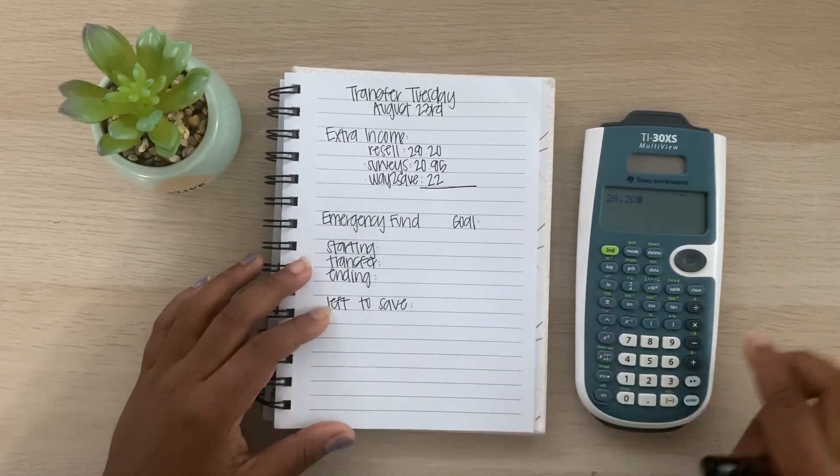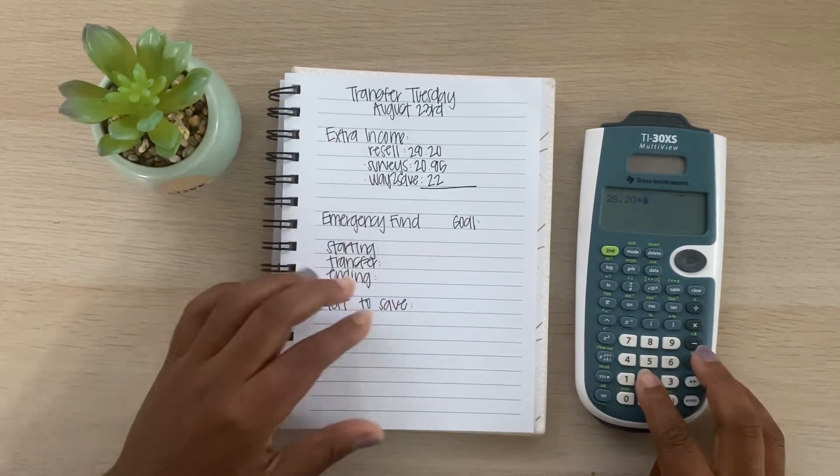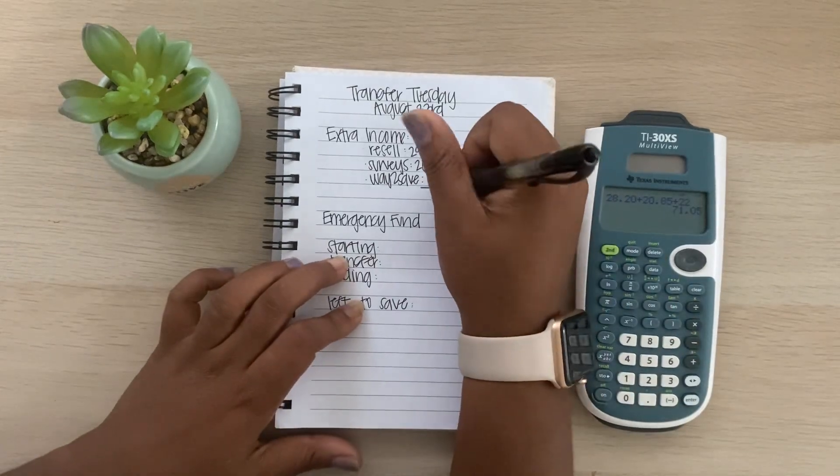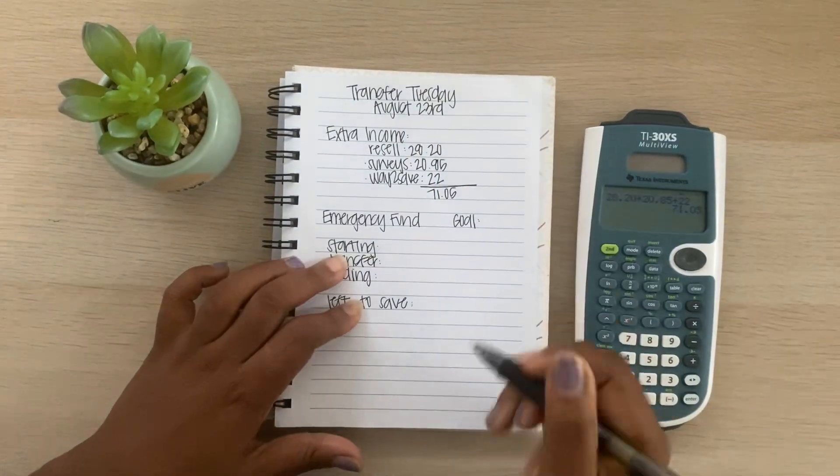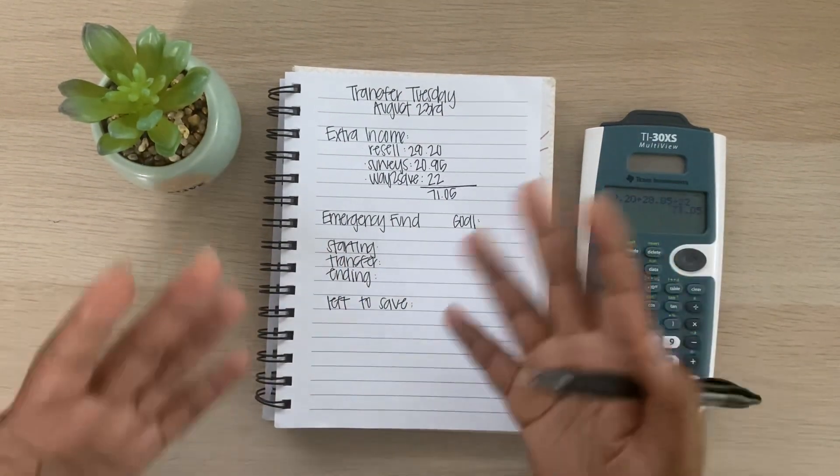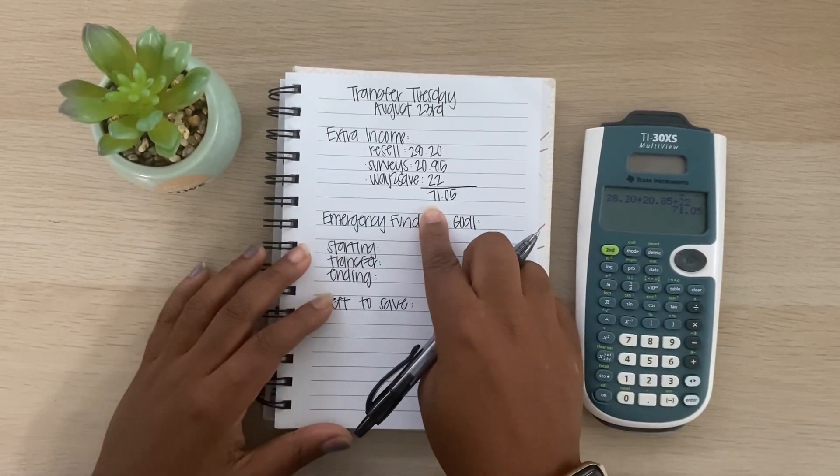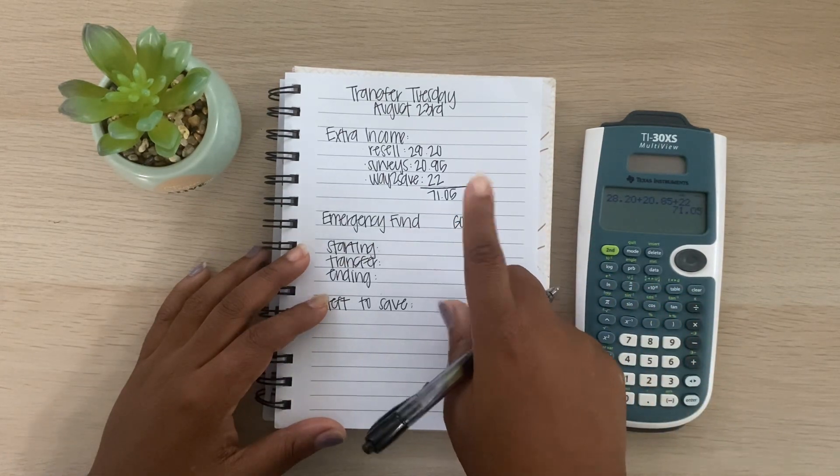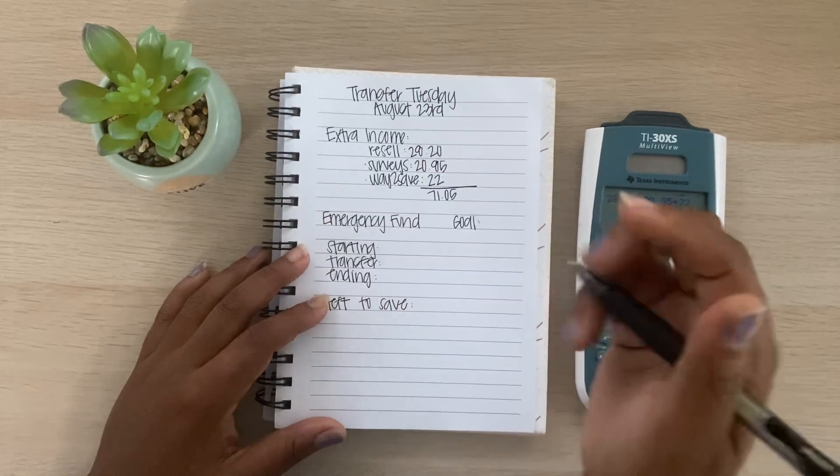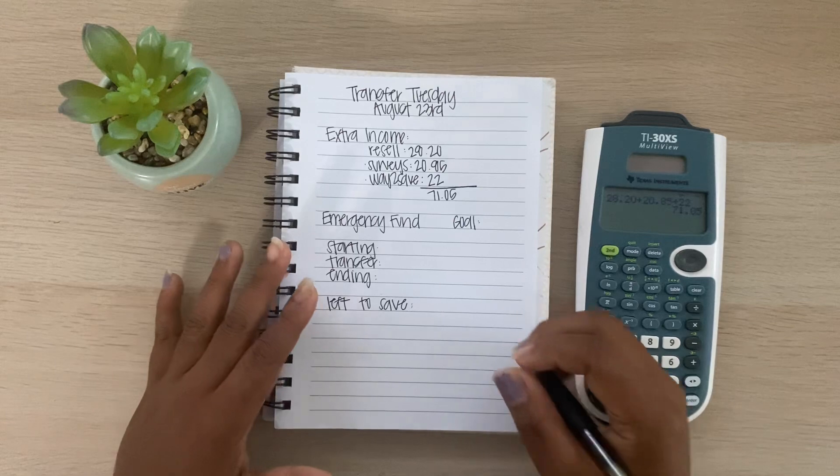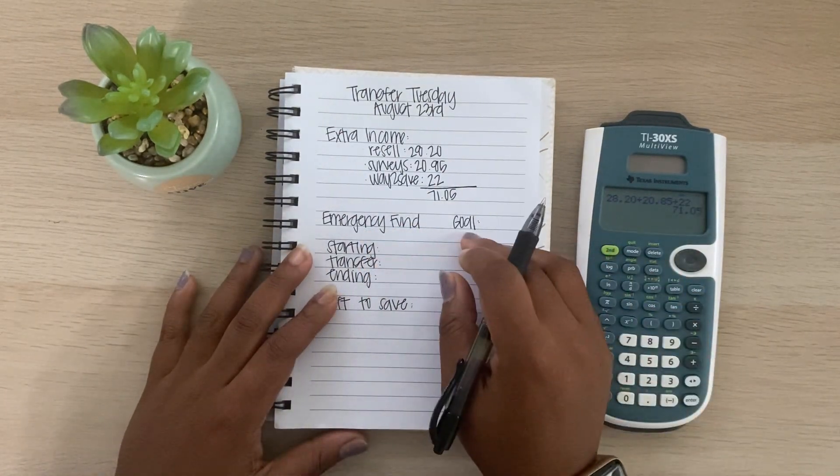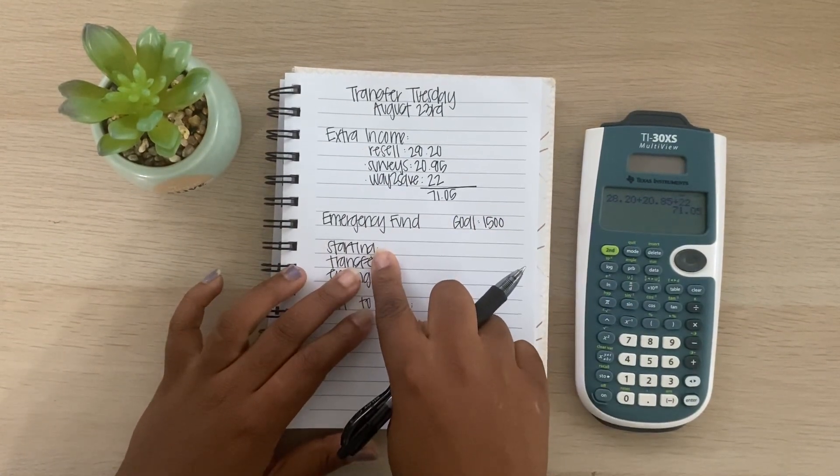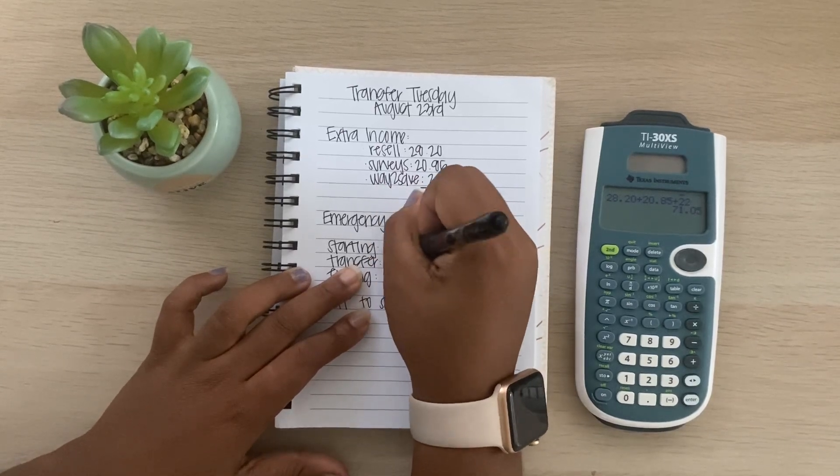So the total amount that we get from our extra income this week is $28.20 plus $20.85 plus $22, so $71.05. And you guys look at that. I just have three additional ways that I've earned extra income this past two weeks and that's $71. And I feel like that is absolutely amazing because this just shows you guys that a little bit really does go a long way. So now we have $71.05 that's coming from this extra income, again not from my paycheck or anything else that I have set aside. And so my starter goal for my emergency fund is $1,500.